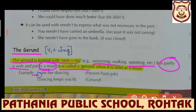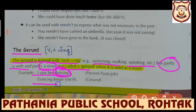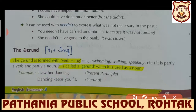'I saw her dancing' - that is present participle, because it has not been used as a subject or noun. But in the next sentence, 'Dancing keeps you fit' - here it is used as a noun, as a subject. So it is called a gerund.